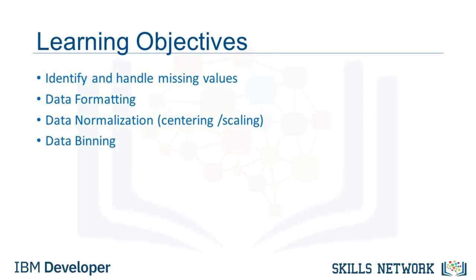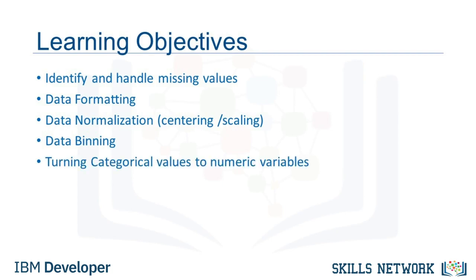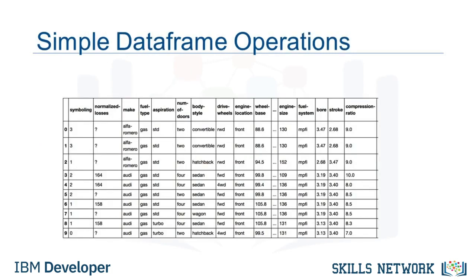And then we'll introduce data binning. Binning creates bigger categories from a set of numerical values. It is particularly useful for comparison between groups of data. And lastly, we'll talk about categorical variables, and show you how to convert categorical values into numeric variables to make statistical modeling easier.